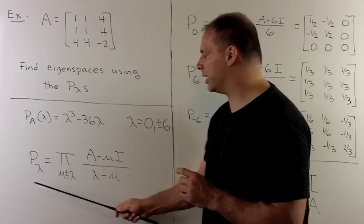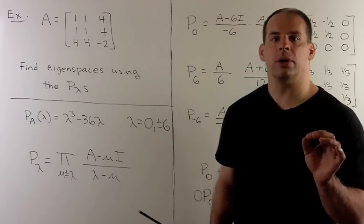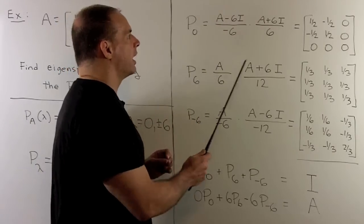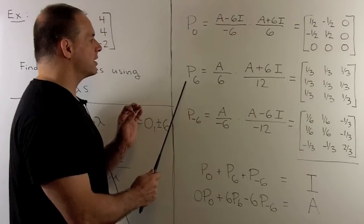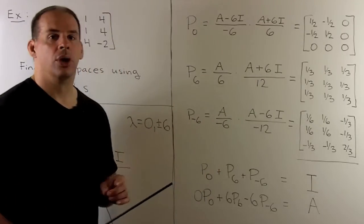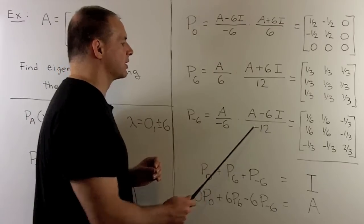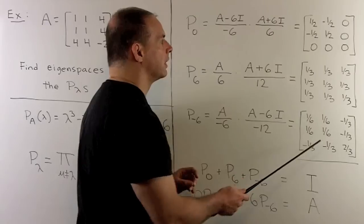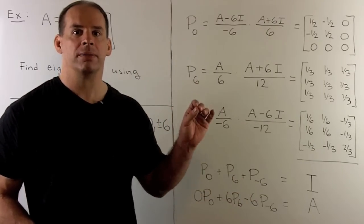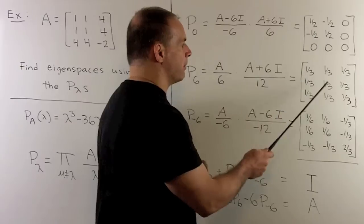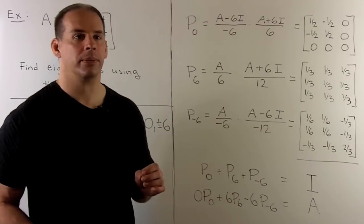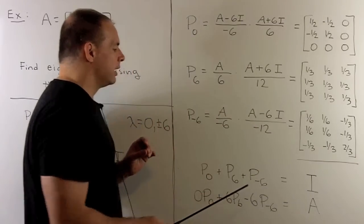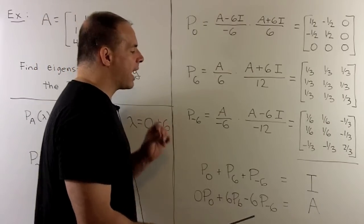Now we compute our projections. For P_0, we have factors for 6 and -6. For P_6, we have factors for 0 and -6. For P_{-6}, we have factors for 0 and 6. Working out each product, we get three matrices. Each matrix is symmetric and equals its own square, so each is a projection operator. The sum of the matrices equals the identity matrix, and the sum weighted by the eigenvalues gives back our original matrix A.